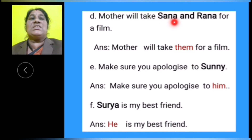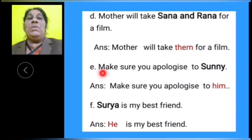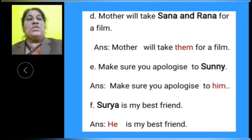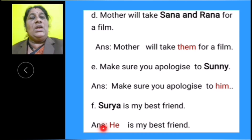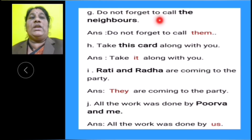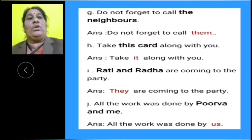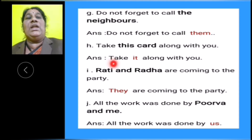D: Mother will take Sana and Rana for a film. The object is highlighted, so object pronoun is used — mother will take them for a film. E: Make sure you apologize to Sunny. The object is highlighted, so object pronoun is used — make sure you apologize to him. F: Surya is my best friend. The subject noun is highlighted, so subject pronoun is used — he is my best friend. G: Do not forget to call the neighbors. The object noun is highlighted, so object pronoun is used — do not forget to call them.